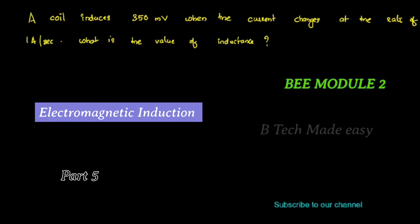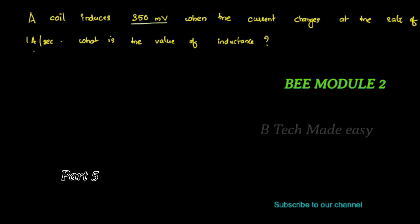A coil induces 350 millivolts when the current changes at a rate of 1 ampere per second. What is the value of the inductance?